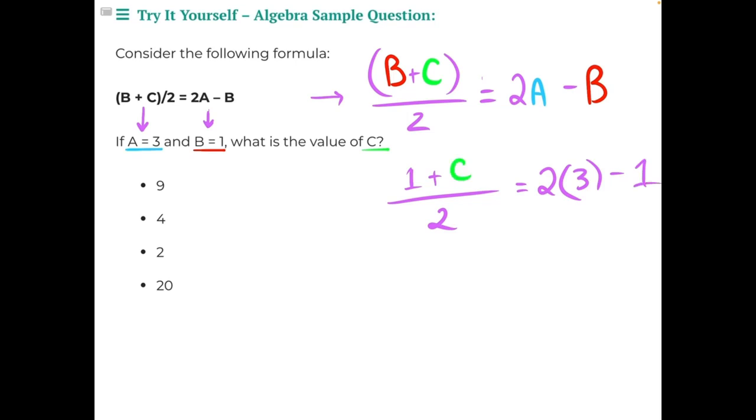Now that we've finished our substitutions, we need to simplify both sides of the equation and isolate c. So let's start with this side of the equation. Starting with our parentheses, 2 times 3 will give us 6 minus 1 will give us 5. And now we can bring down everything